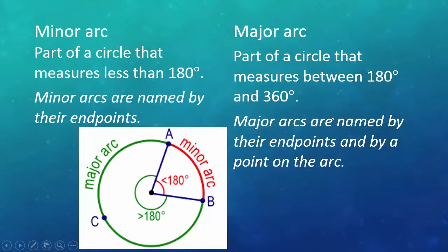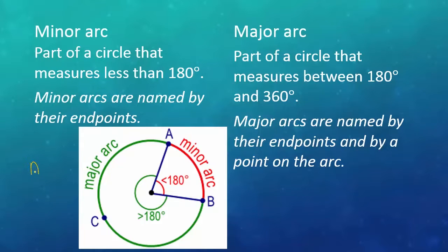Minor arc: part of a circle that measures less than 180 degrees. Minor arcs are named by their endpoints. In this picture over here, the minor arc is AB, and the notation for it would be AB with an arc on top of the letters.